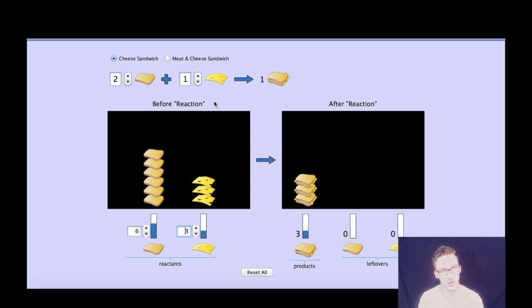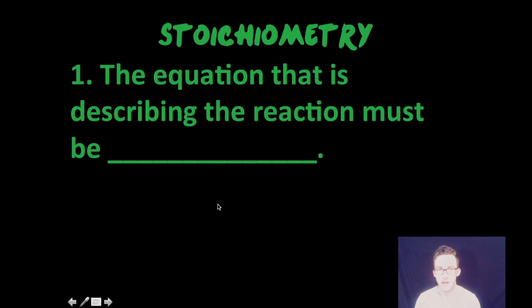That in a nutshell is what stoichiometry is all about. Just comparing how much of your reactants do you have to how much of your products. Now there are a couple important things to keep in mind when you're doing stoichiometry calculations.